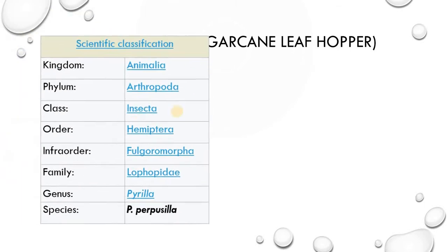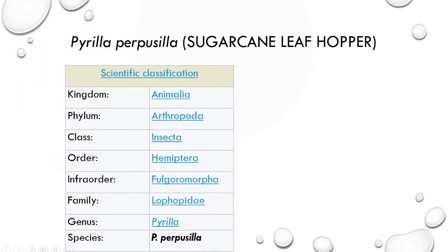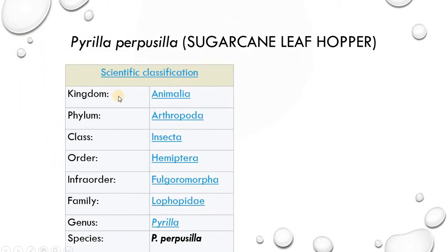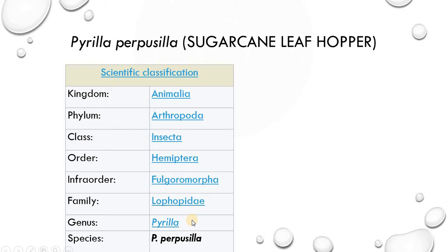First of all, the classification: Kingdom Animalia, Phylum Arthropoda, Class Insecta, Order Hemiptera, Infraorder Fulgormorpha, Family Lophophidae, Genus Pyrella, Species Perfusilla.